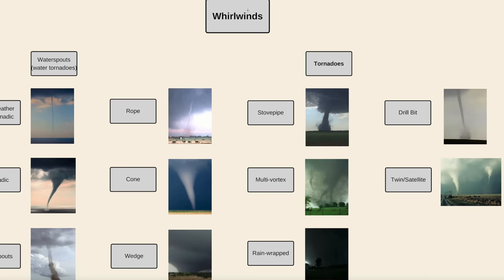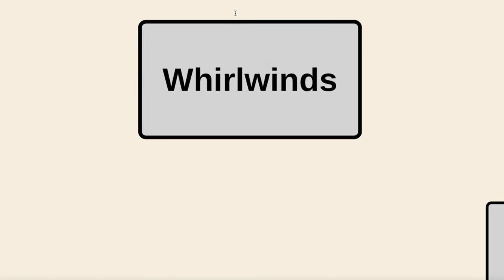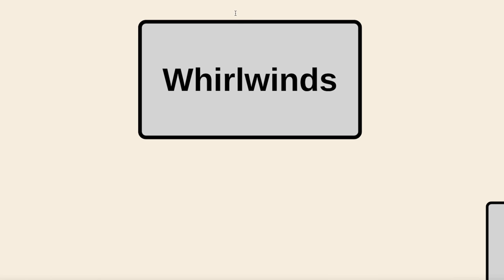Before we get into it, we need a blanket term, because there's an actual term for this phenomenon — it's called a whirlwind. When wind whirls, you get a whirlwind. That's our top term on the chart we have here, and now we're going to go down and talk about some of the weaker whirlwinds.